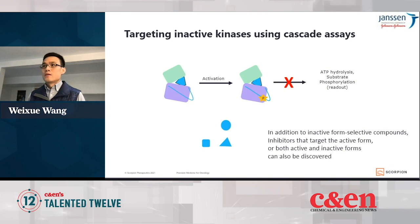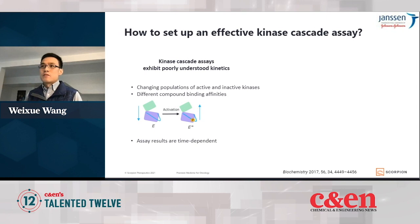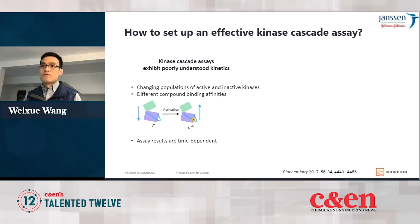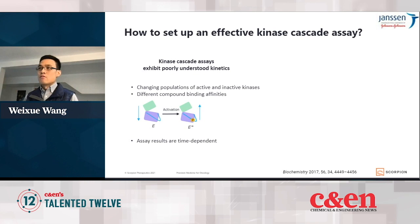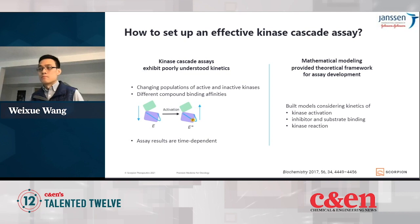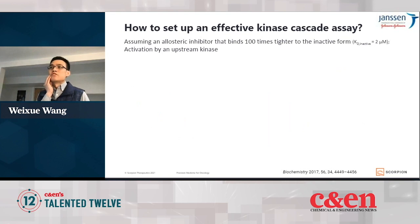So how do we set up effective kinase cascade assays? It wasn't clear when we started, because kinase cascade assays exhibit complicated kinetics — we're dealing with two changing populations of the kinase, the inactive form and active form, and they can have very different compound binding affinities and catalytic properties. So the assay results are going to be time dependent. To get a better understanding and provide a theoretical framework for assay development, I did some mathematical modeling considering the kinetics of kinase activation, inhibitor and substrate binding, and kinase reactions. Indeed the mathematical modeling and simulations reveal some unique properties of kinase cascade assays.